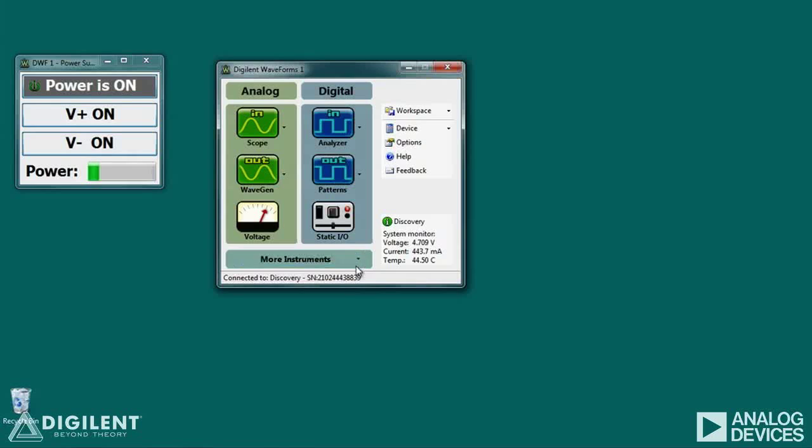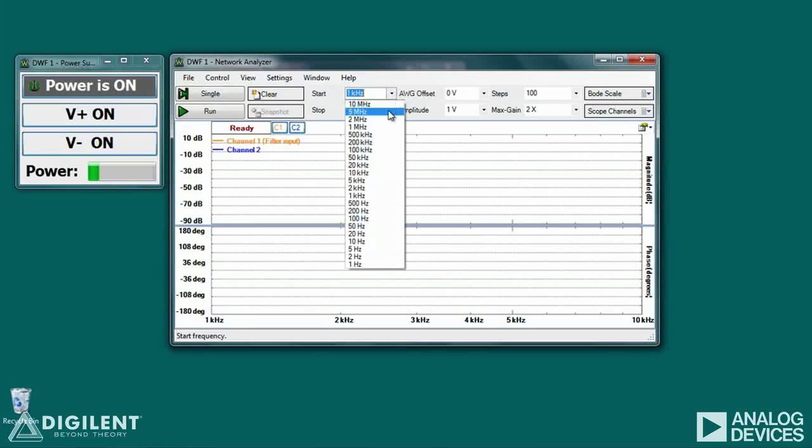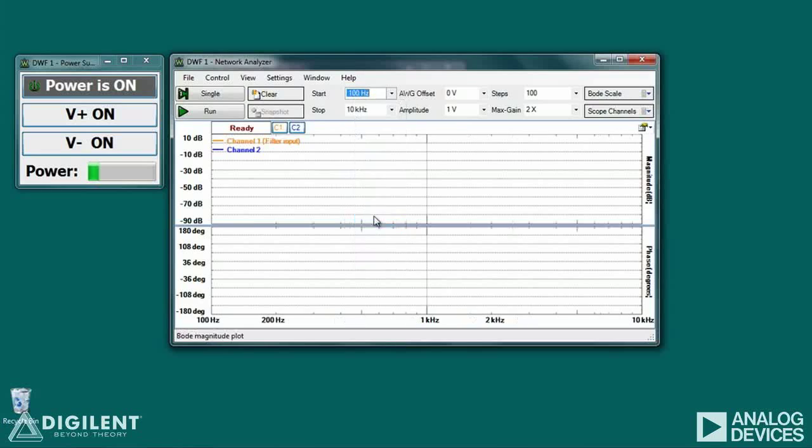Now open the network analyzer. Our expected cutoff frequency is about 1600 Hz. We'll look at a frequency range that goes from at least about an order of magnitude below this to an order of magnitude above it. Let's go from a starting frequency of 100 Hz to an ending frequency of 100 kHz.